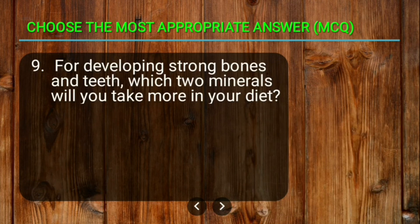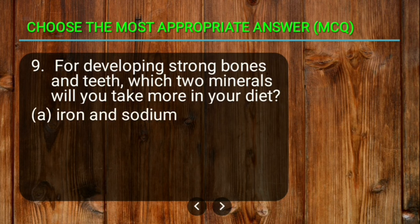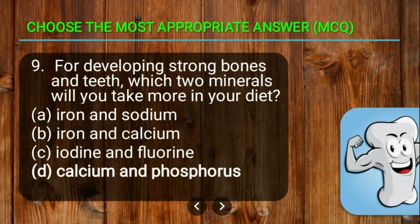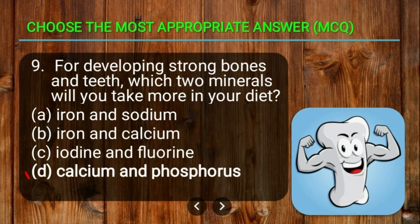Question nine: for developing strong bones and teeth, which two minerals will you take more in your diet? The options are iron and sodium, iron and calcium, iodine and fluorine, or calcium and phosphorus. The correct answer is calcium and phosphorus.